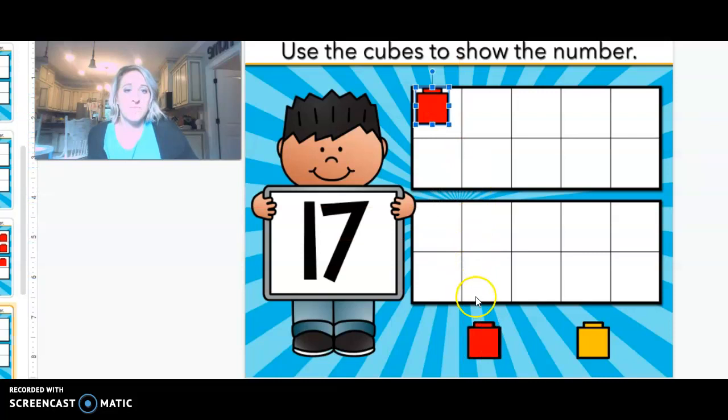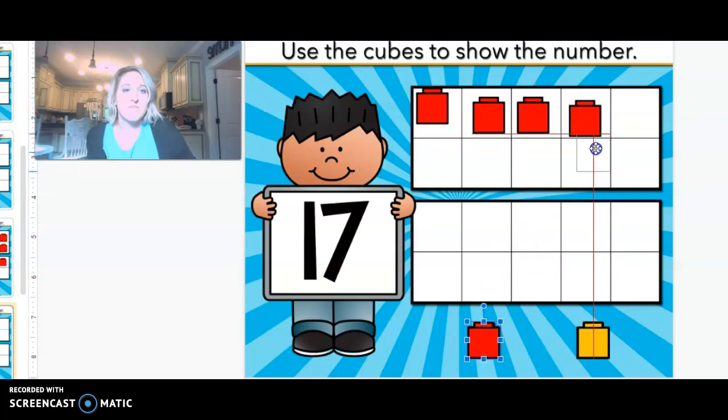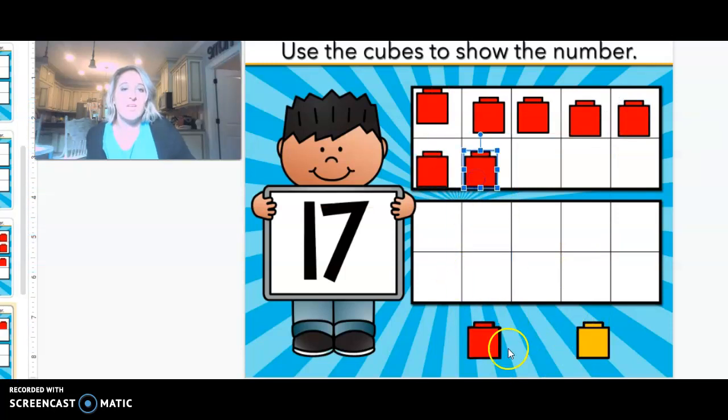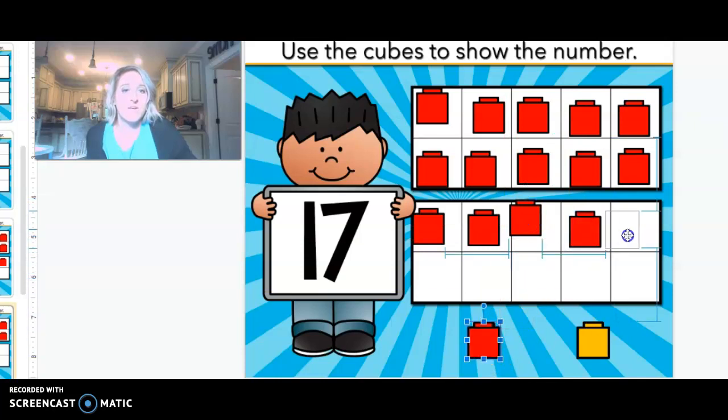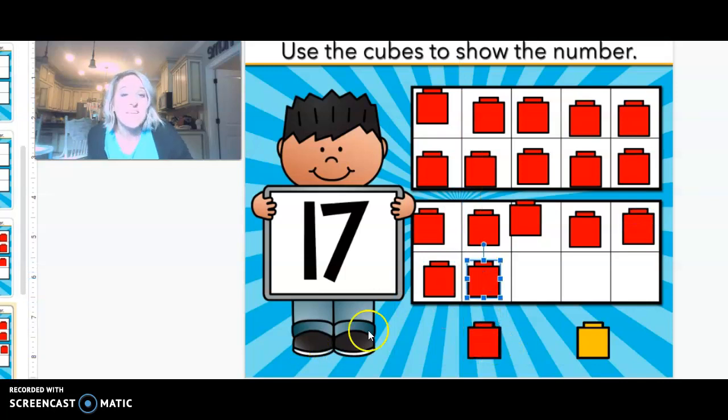1, 2, 3, 4, 5, 6, 7, 8, 9, 10, 11, 12, 13, 14, 15, 16, 17. This is what 17 blocks look like.